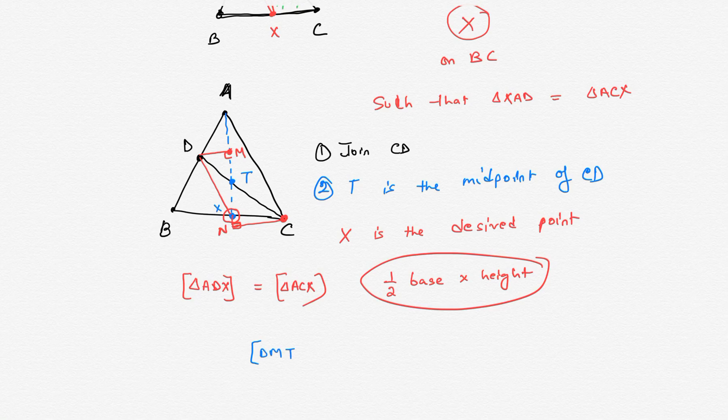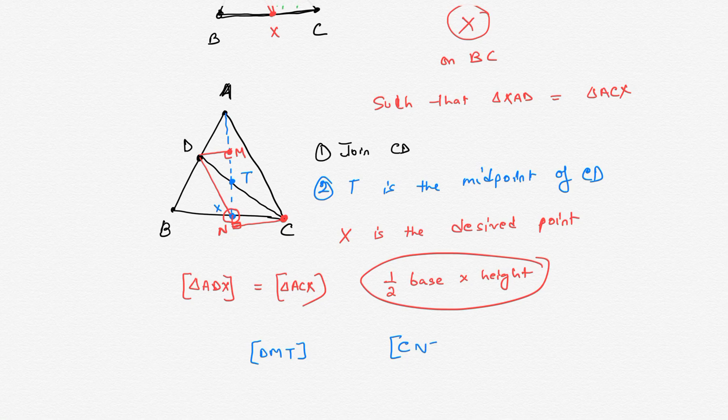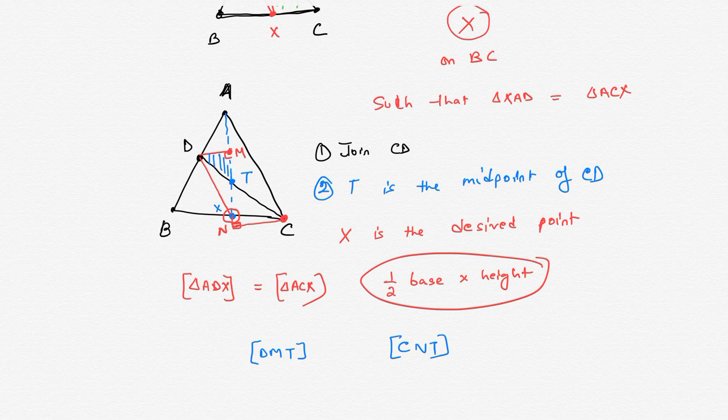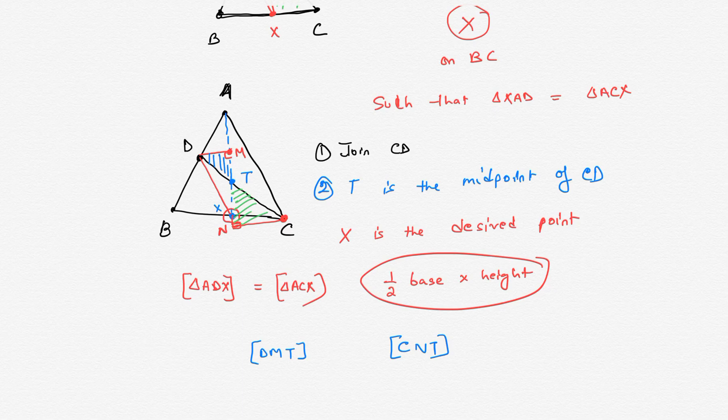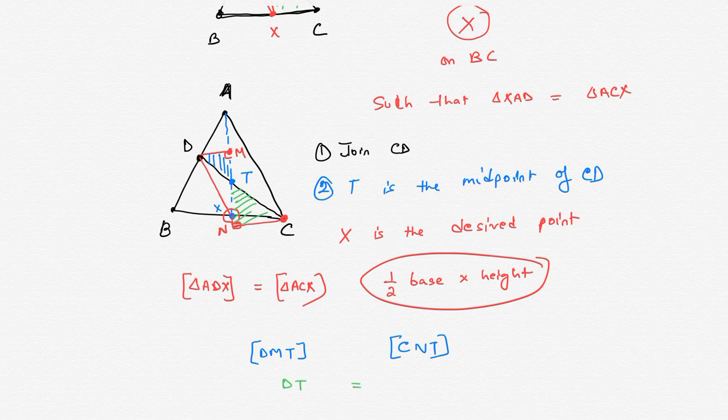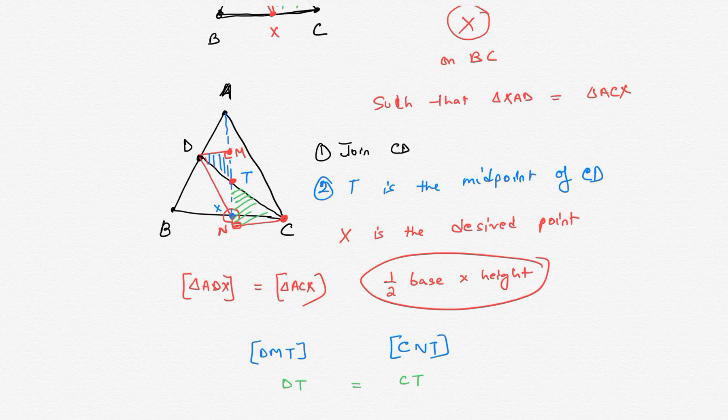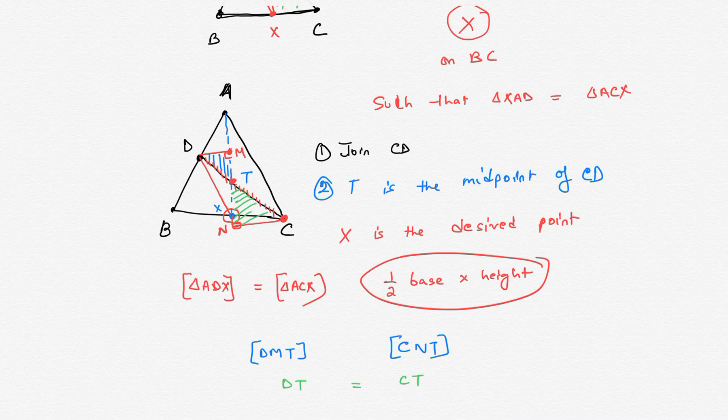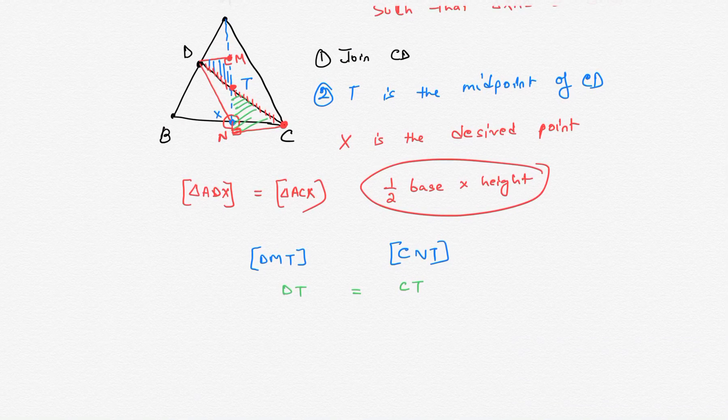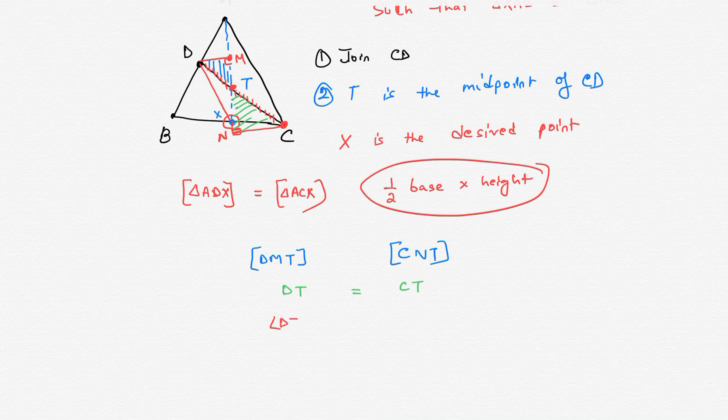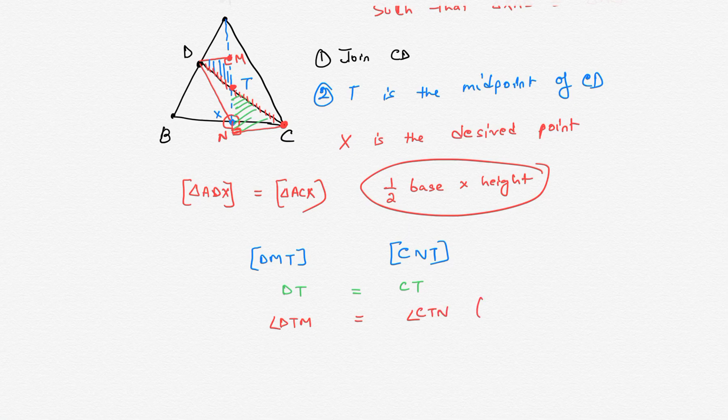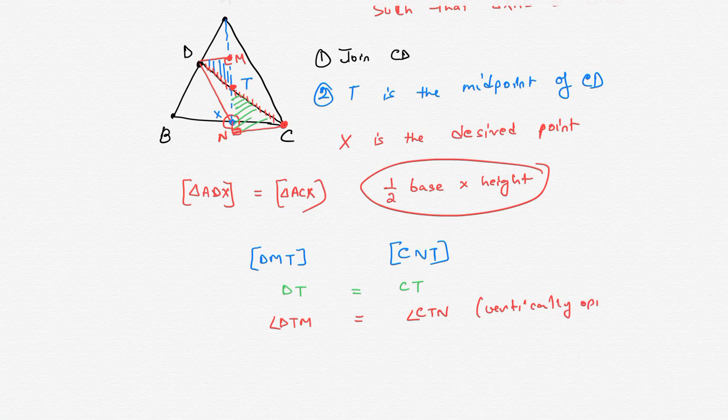Triangle DMT and triangle CNT. What can we say about these two triangles? First, DT equals CT. Obviously, because we picked T such that DT equals CT. T is the midpoint of CD. No confusion there. Next, angle DTM equals angle CTN. That's vertically opposite.